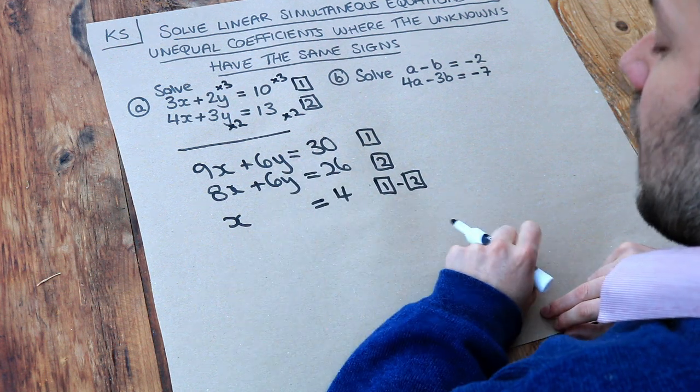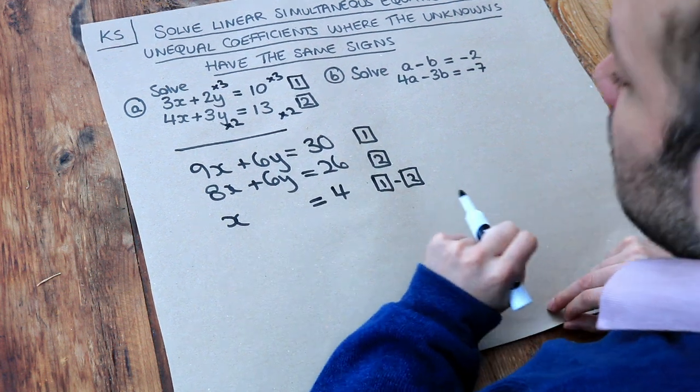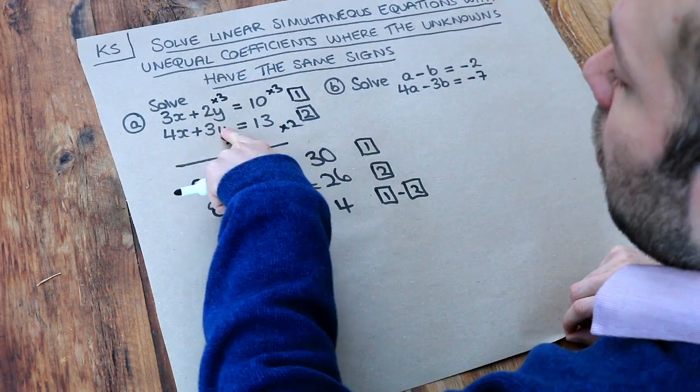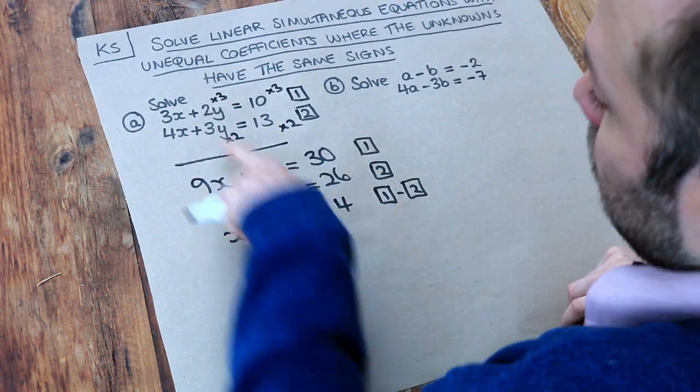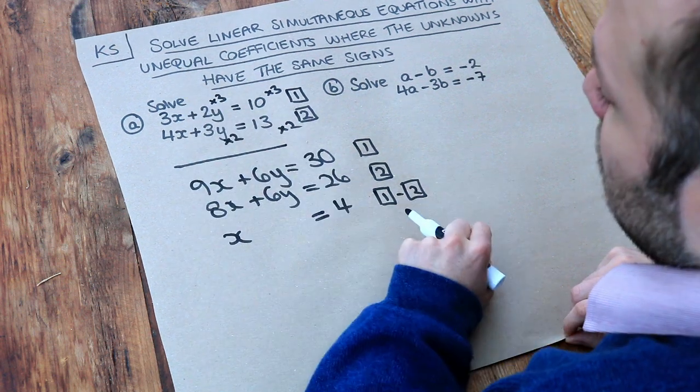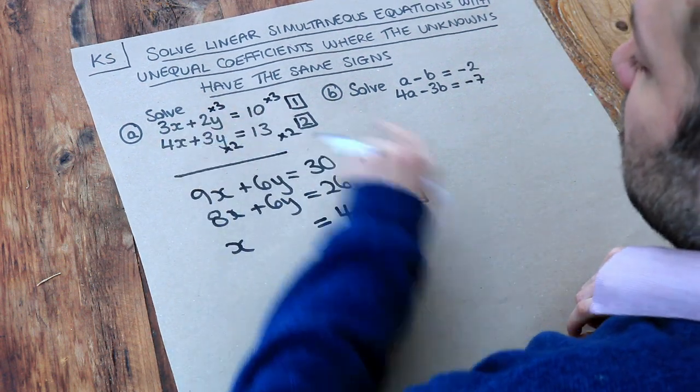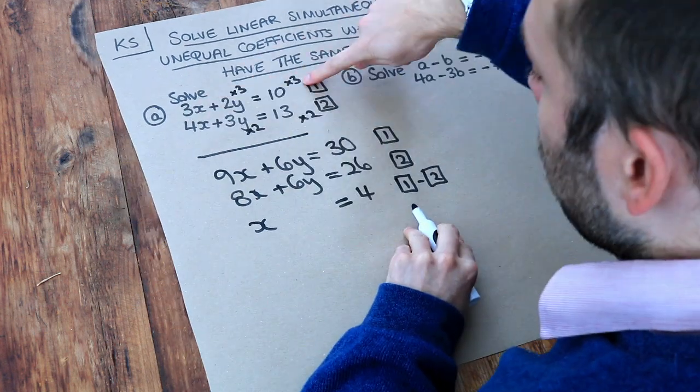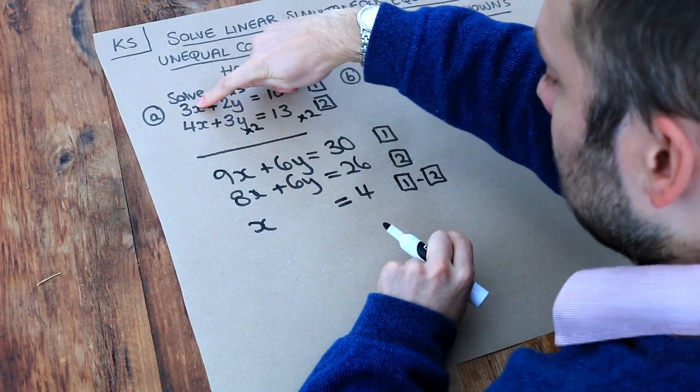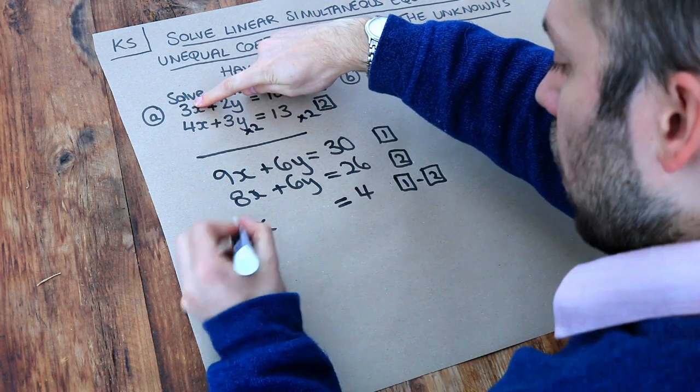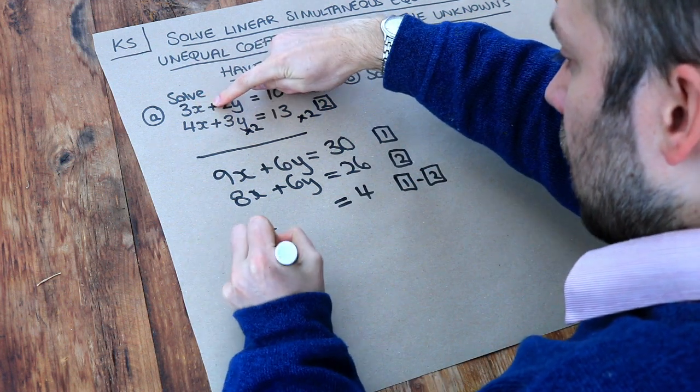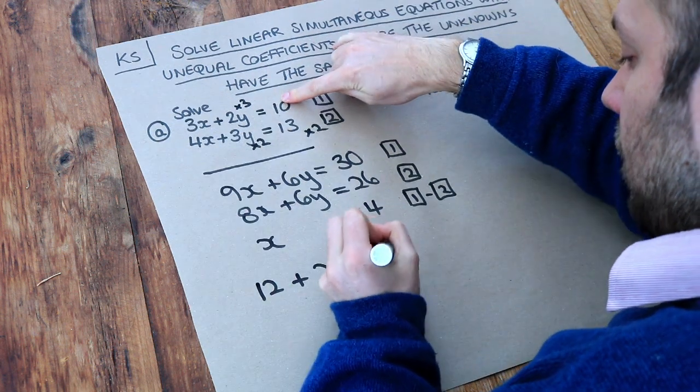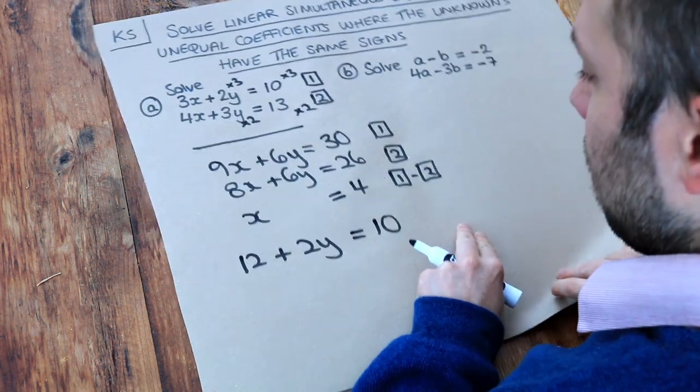So hooray, we found out the value of x; it's 4. And do you remember, the last step is just substitute that value that you found into either one of the equations. It can either be the original equation or the scaled equation. You'll get smaller numbers if you substitute into an original equation. So I'm going to substitute into the original equation 1. So we've got 3 times x, that's 3 times 4, so that's 12, plus the 2y, we don't know what y is yet, equals 10.